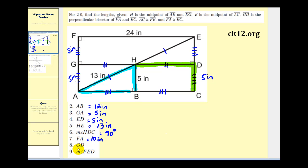Now we want to determine the length of segment GD. Well segment GD would be congruent to segment FE so GD would have to be 24 inches.